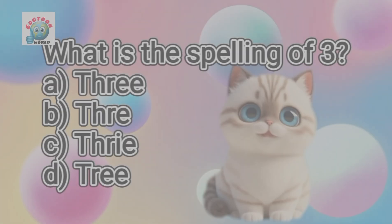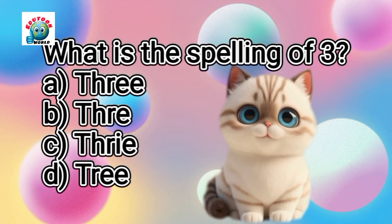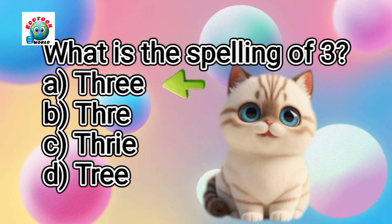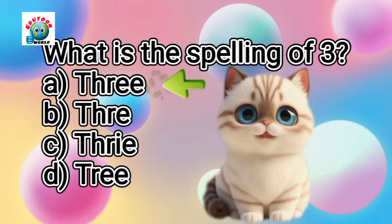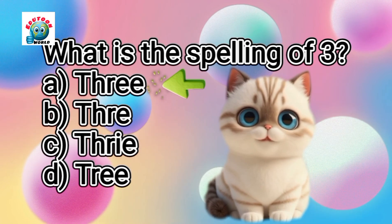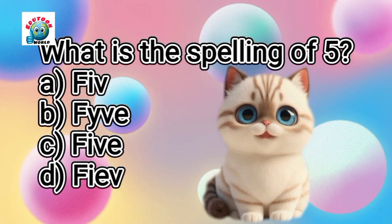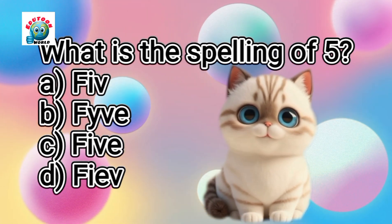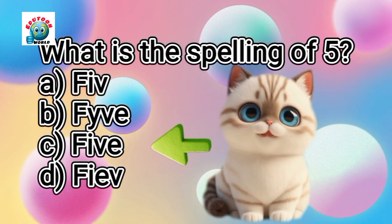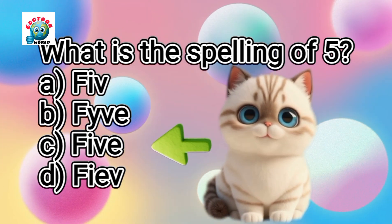What is the spelling of digit 3? Correct answer is A, THREE 3. What is the spelling of digit 5? Correct answer is C, FIVE 5.